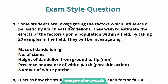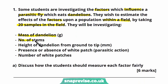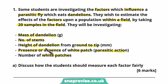The question says some students are investigating the factors which influence a parasitic fly which eats dandelions. They wish to estimate the effects of those factors upon a population within a field by taking 20 samples. They will be investigating the mass of the dandelion, the number of stems, the height from the ground to the tip, the presence or absence of a white patch indicating parasitic action, and the number of white patches. It's similar to the aphid and apple tree leaf sample — looking at how different features of the dandelion might affect whether it's infected by the parasitic fly and to what extent.